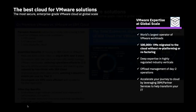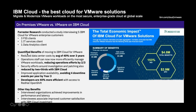We commissioned Forrester to study why five clients did their VMware cloud journey with us — three financial services clients, one IT services client, and one data analytics client. The most important finding was that these clients were able to reduce data center costs by an average of 40% over three years — whether that's cost of space, energy, or resources.